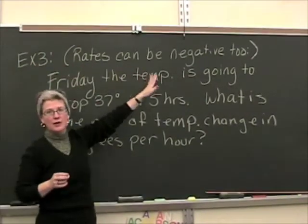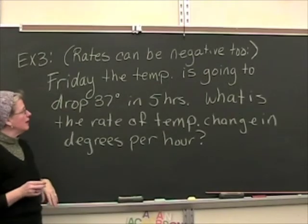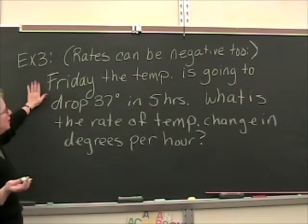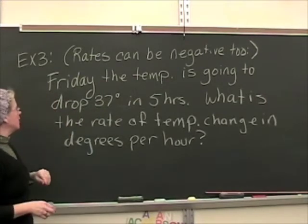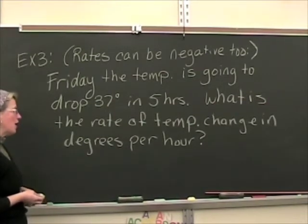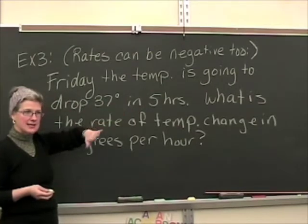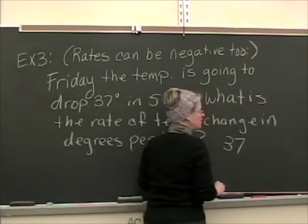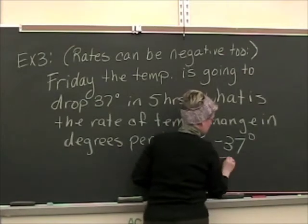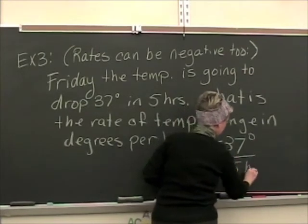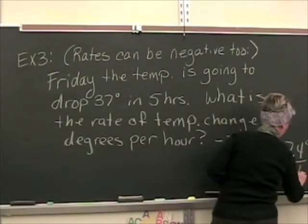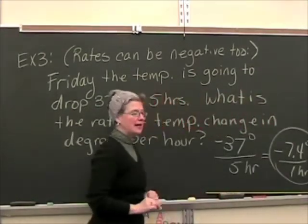Example 3. We need to make a note here that rates can be negative, too. All you need is something that's dropping or decreasing over a period of time to illustrate that. Here we have a temperature problem. Friday, the temperature is going to drop 37 degrees in 5 hours. What is the rate of temperature change in degrees per hour? We're going to drop degrees to hours. This is a drop, so we cannot write just 37. We have to write negative 37 because it's decreasing. I need the unit drop of 7.4 degrees every 1 hour. So it's very possible to end up with negative rates.